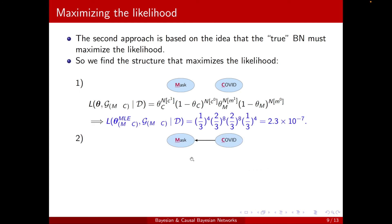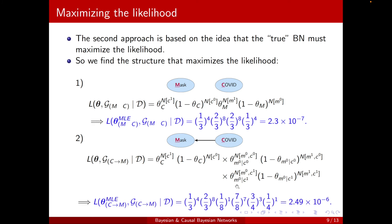Similarly, I can calculate the likelihood for the other networks. Here I have Mask condition on COVID. So we'll have the CPD of M condition on C. And I can maximize these parameters using the MLE technique. And at the end, I will find the likelihood of the structure. Now, note that this likelihood is greater than the previous one, than the case where Mask and COVID are independent. So if I'm going to use the likelihood as my condition for choosing the structure, then I have to choose this one. Okay?